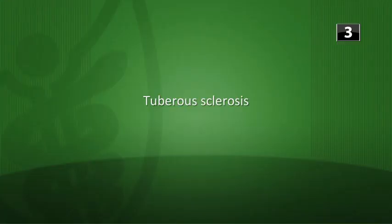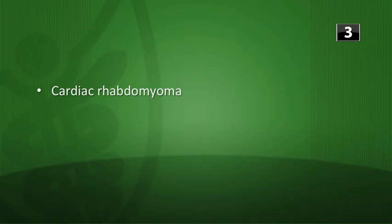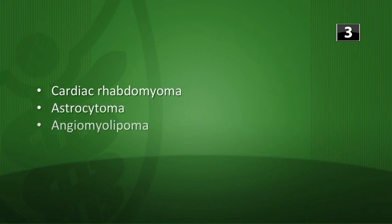This is a classic scenario for tuberous sclerosis. The neoplasms we're worried about are cardiac rhabdomyoma, astrocytoma, and angiomyolipoma. Make sure you know all of those. That's going to be it for the warm-up — let's go to the lecture now.